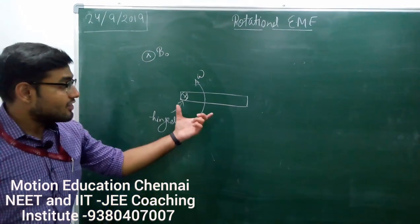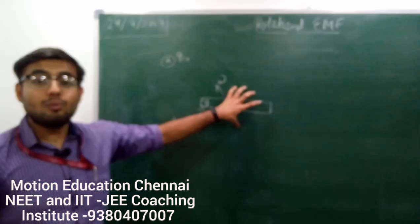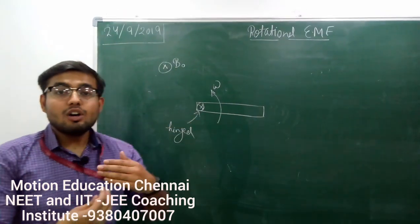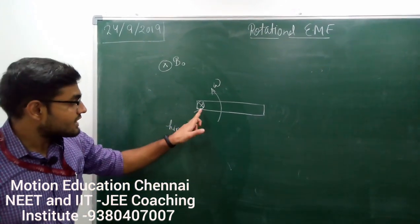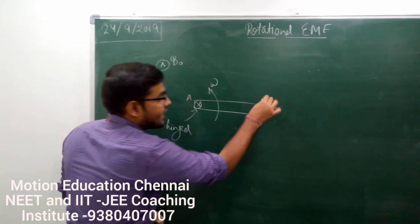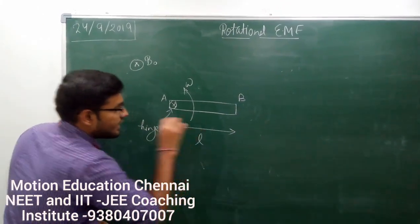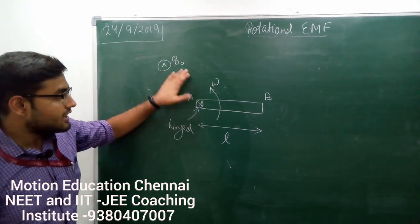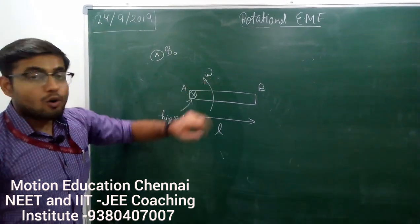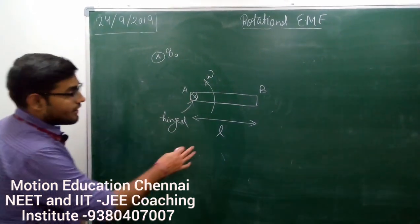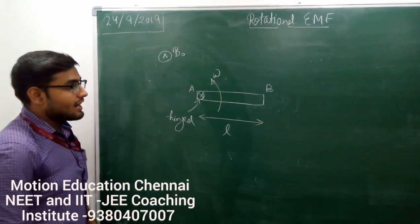We have a rod, but it is not moving — it is hinged, so it is only rotating. There is no lateral motion, only rotational motion. This rod is fixed at point A, the other end is point B, the length of the rod is L, there is a constant magnetic field B₀, and this rod is rotating anticlockwise with an angular speed of omega. So if I want to find the EMF developed between these two points, how will I do that?